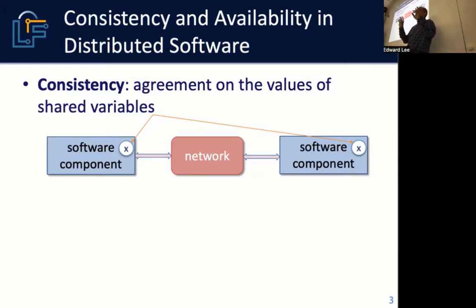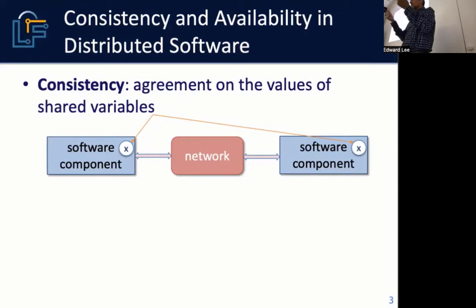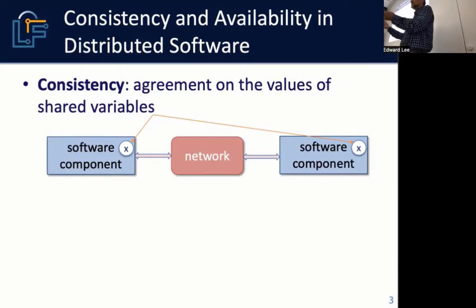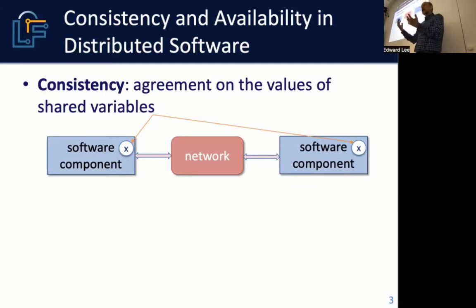You have to understand that agreement cannot be reduced to a naive statement based on Newtonian time — that at an instant in time both components have the same variable assignment value — because 'at the same time' doesn't make any sense. So we have to reduce this to some kind of semantic property, and we have to understand exactly what we mean by consistency. It turns out to be a pretty subtle topic.